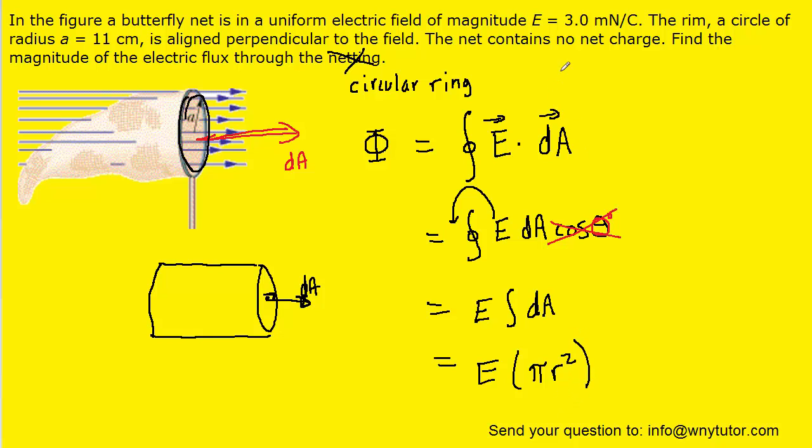At this point, we have to simply plug in the electric field, which is given to us in millineutons per coulomb. So we'll actually have to multiply that by ten to the minus three in order to get it into newtons per coulomb. And then the radius of the circular ring was given to us in centimeters, so we'll make sure that we converted to meters, multiply it by ten to the minus two. So we'll go ahead and plug in for the radius and the electric field.